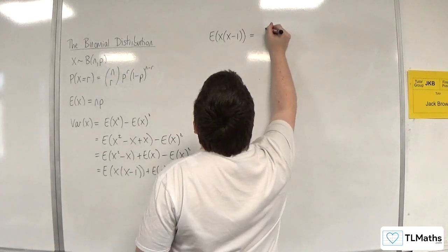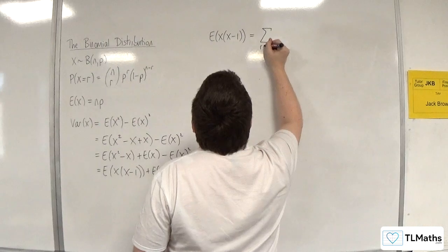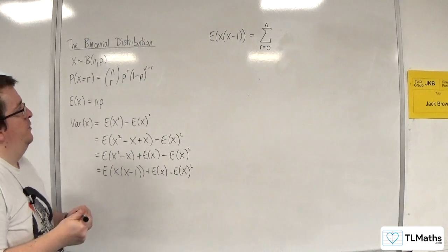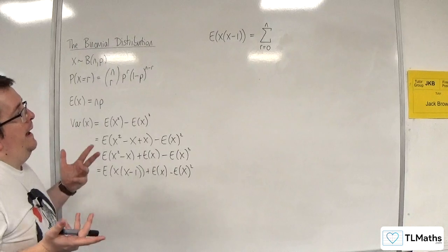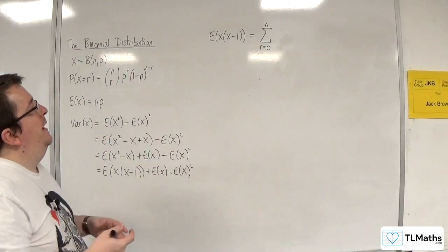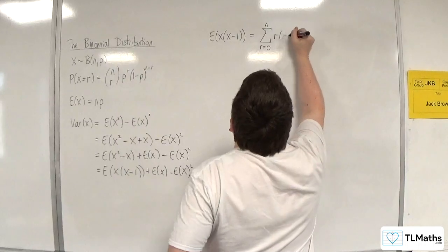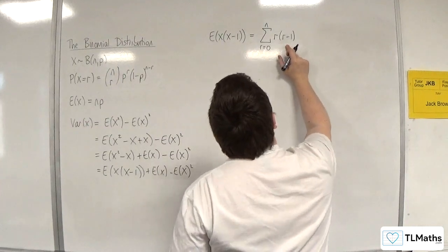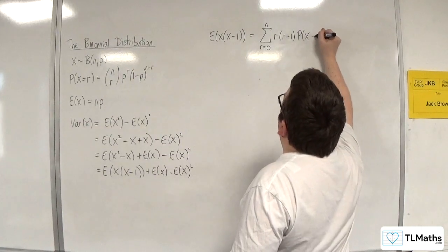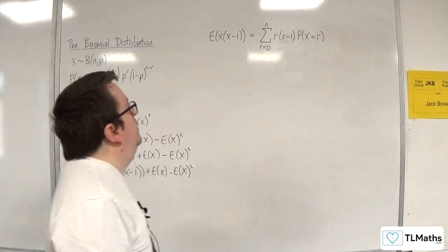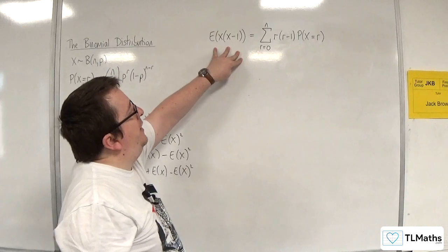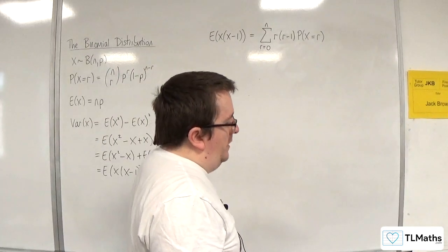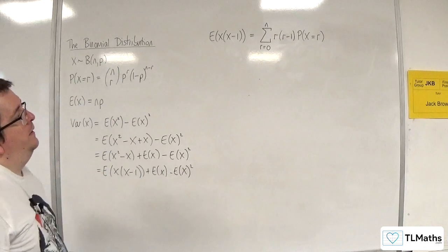You might be wondering why I'd do that. Well, the reason is that I know I'm going to be working with factorials, and it might be useful if I have r times (r−1), which I could then simplify a factorial with. So that may well be giving away some of the game here. I know that the expected value of x(x−1) will be the sum from r=0 to n of r(r−1) times the probability of x being equal to r.